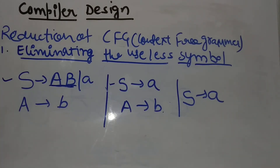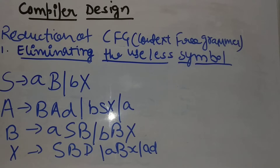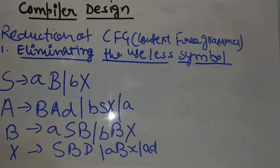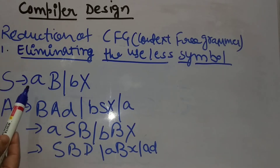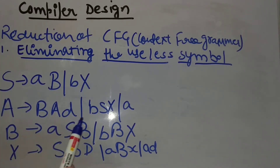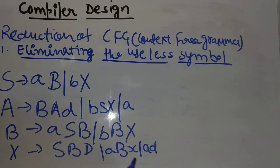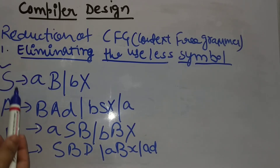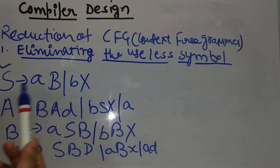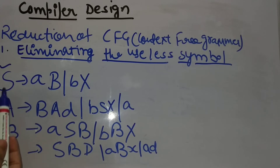Okay friends, let's take another example. This is our second example. S tends to A, B, X. A tends to B, A, D. B tends to A, S, B, X. X tends to S, B, D, A, B, X. So in source symbols, if we talk about capital non-terminal symbols, then our B is a production, but A is not. B and capital X are not generating terminal strings.